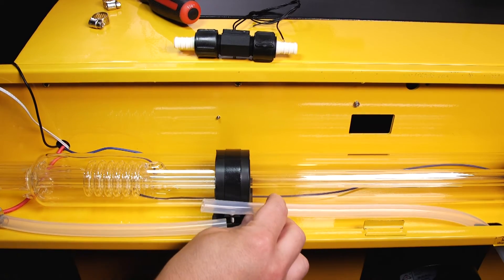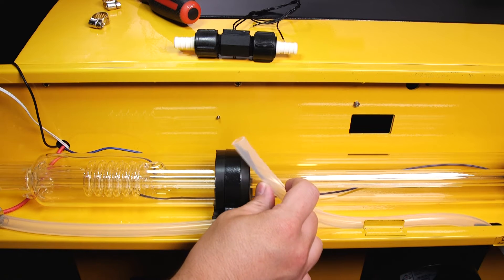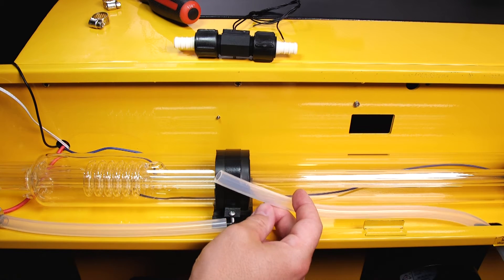Now I've cut another section of hose which will go from the other side of the water flow switch to the water pump.